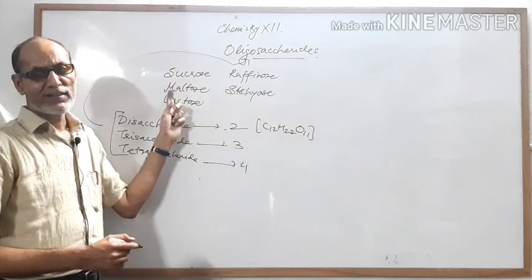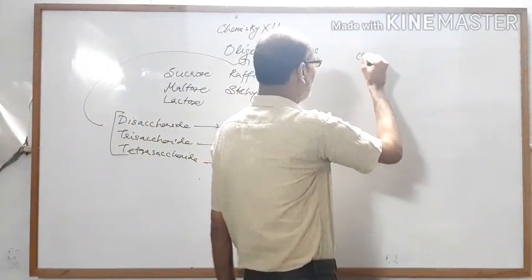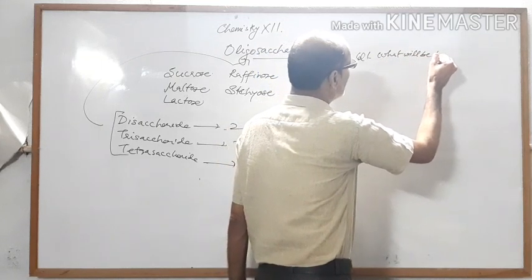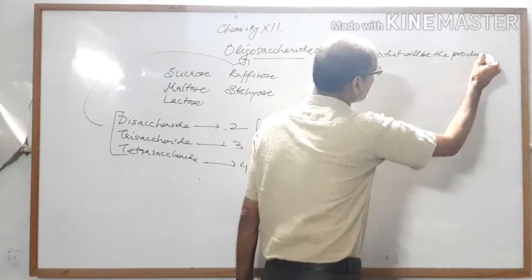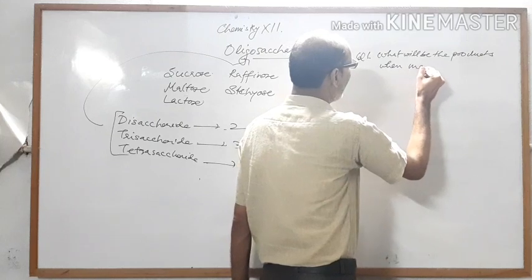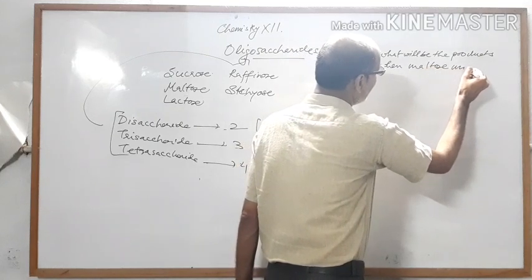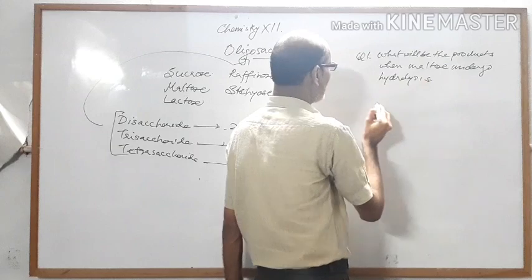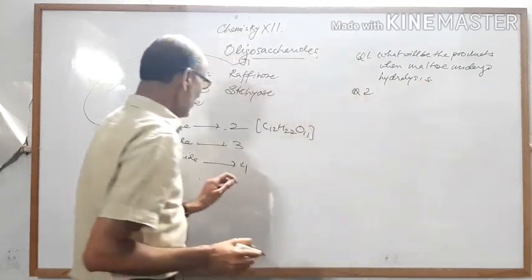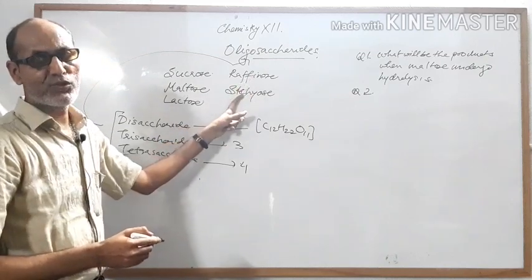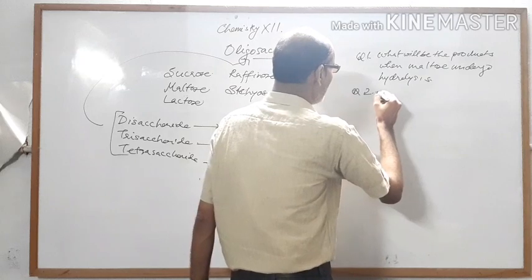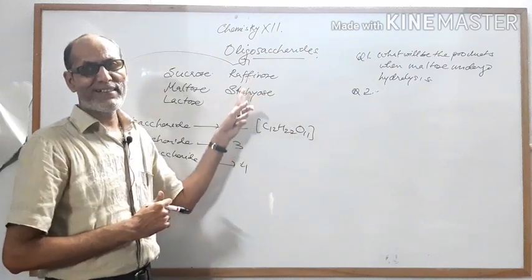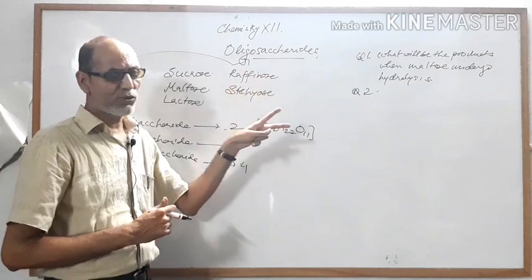Your question: What will be the products when maltose undergoes hydrolysis? That is question number one. Question number two: What will be the formula of raffinose and stachyose? Note these down.